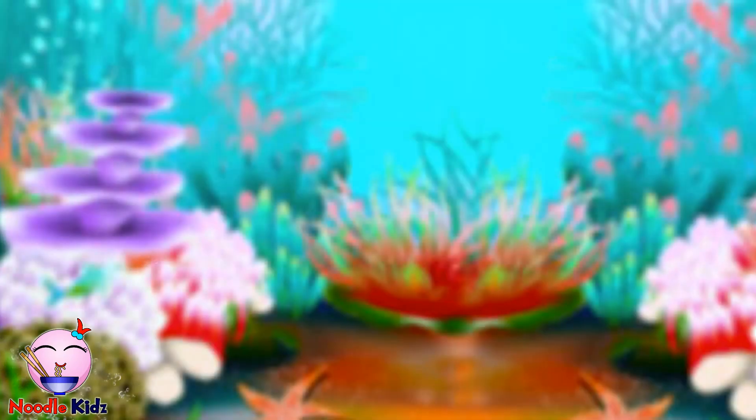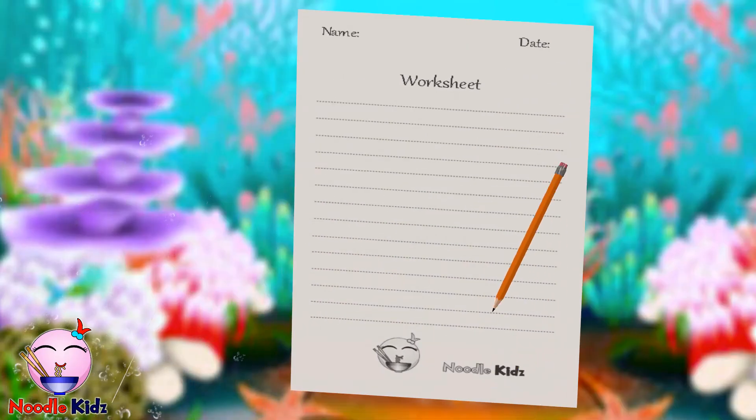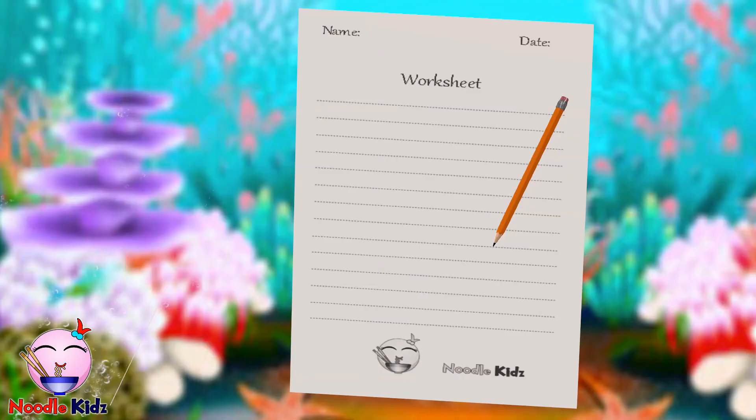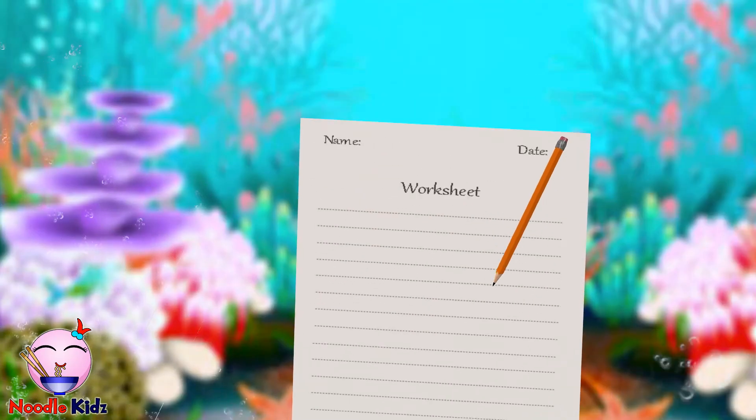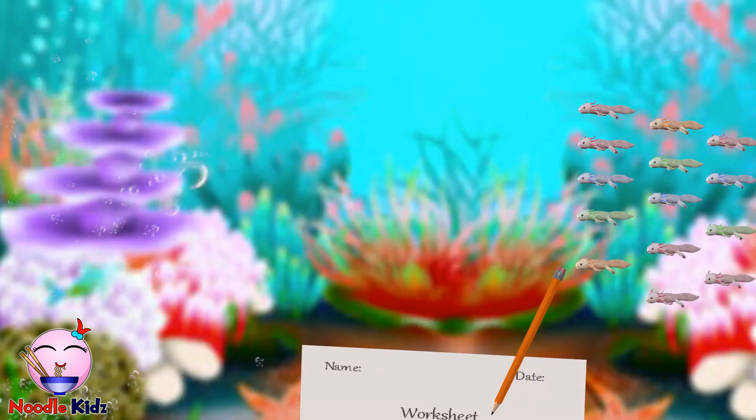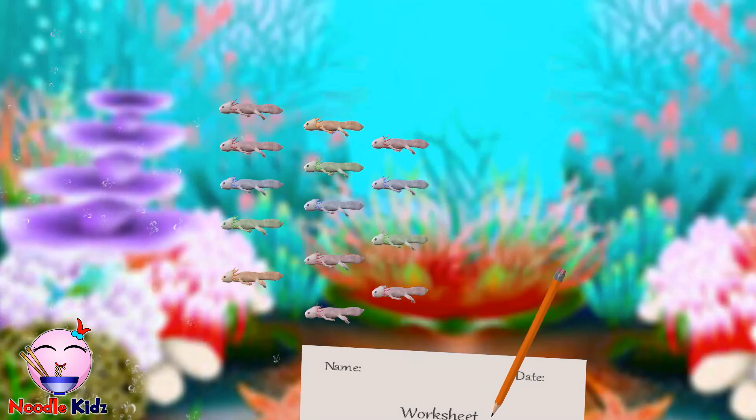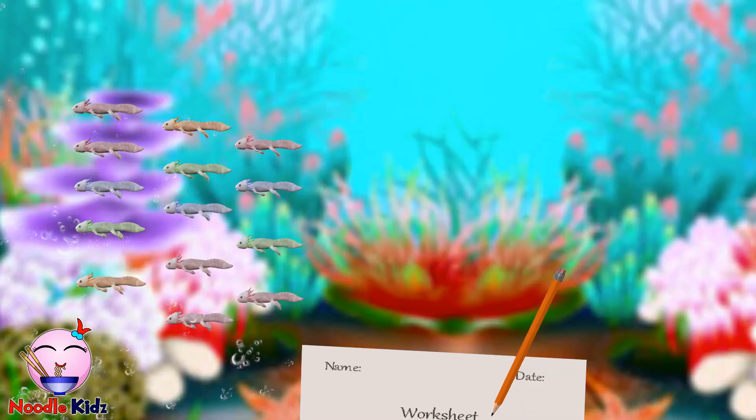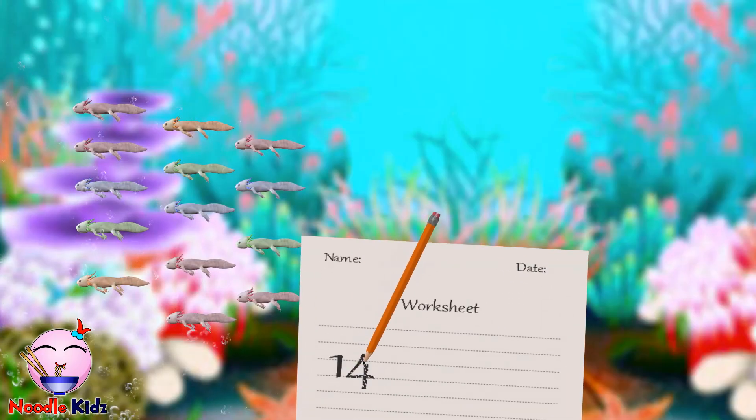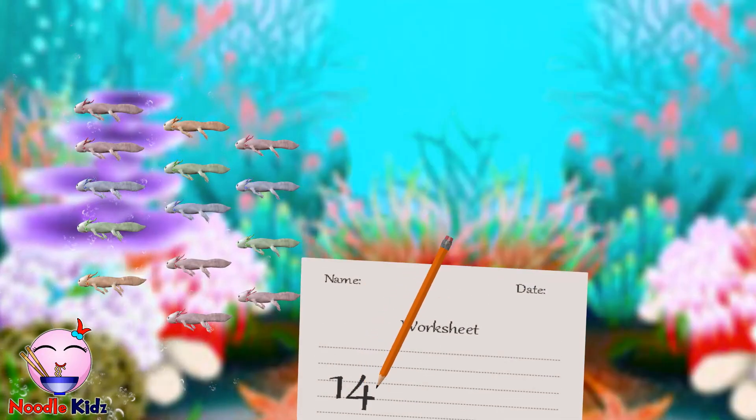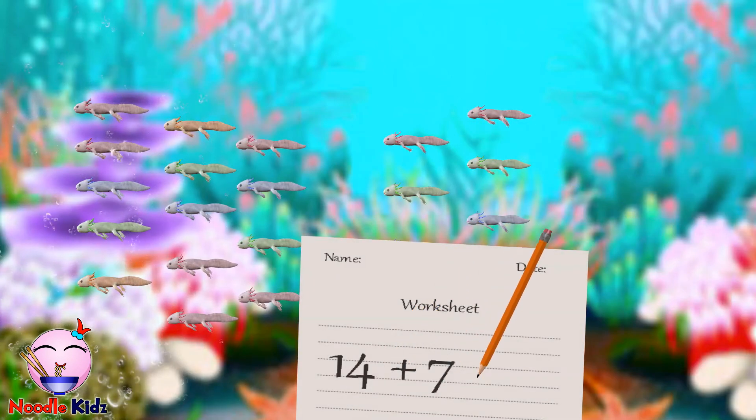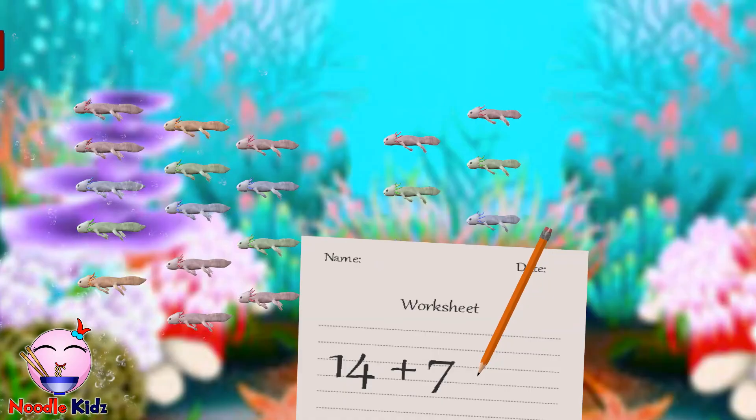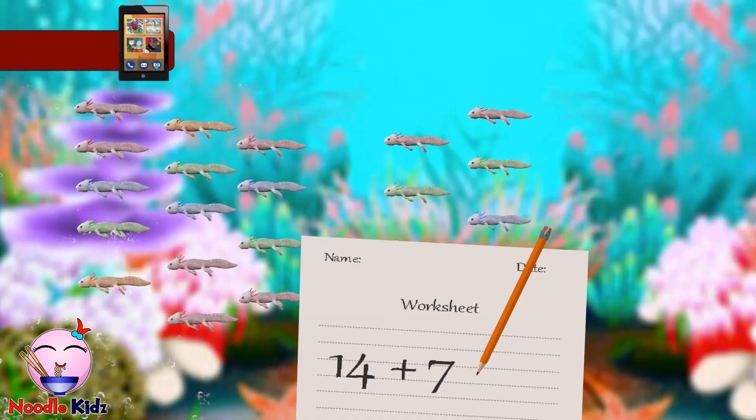Now, we do it together. Please have a paper and a pencil ready. Ready? Let's go. We have 14 axolotls. Here comes 7 more. How many axolotls do we have now?